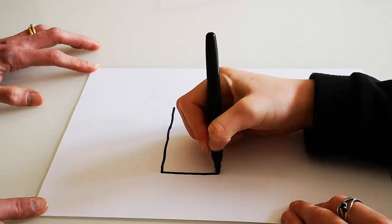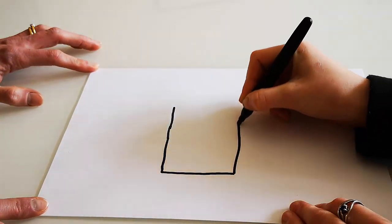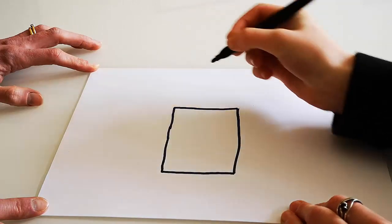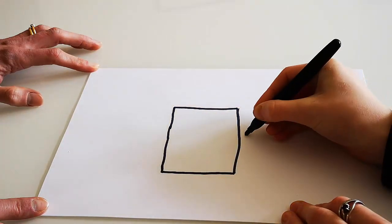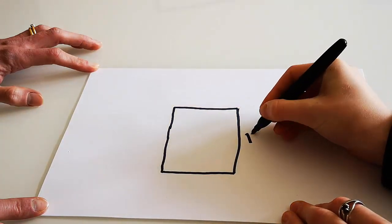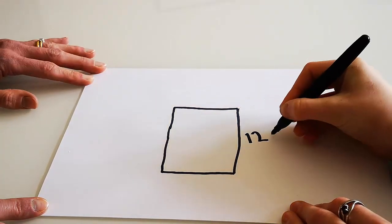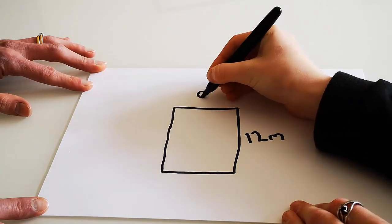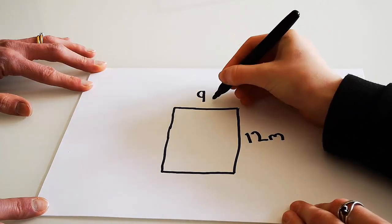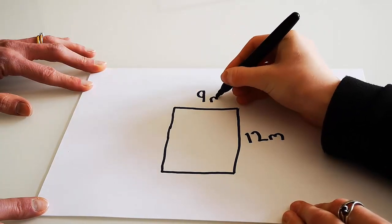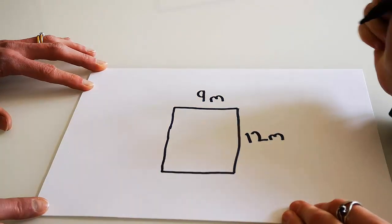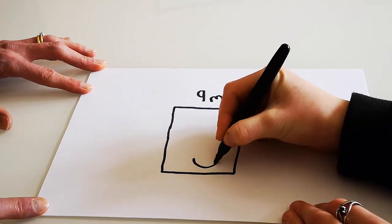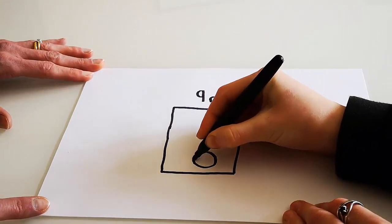If you draw a picture of what you think our garden looks like — the long side is 12 meters and the short side is nine meters. We also have a trampoline somewhere, which goes here on the diagram.